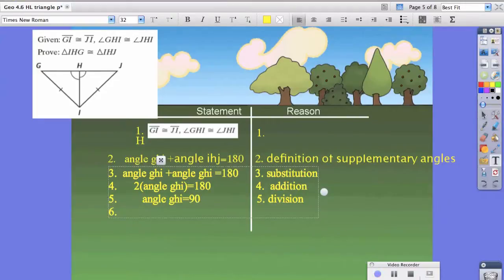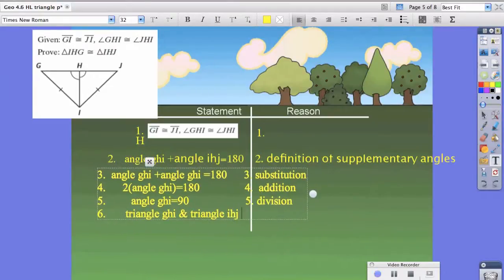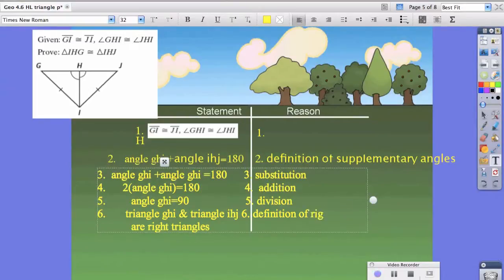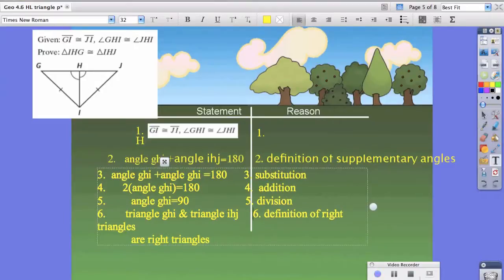Now we could say that triangle GHI and triangle IHJ are right triangles. We could say that because of the definition of right triangles. It's really important that we mention that it is a right triangle and that we can prove it.